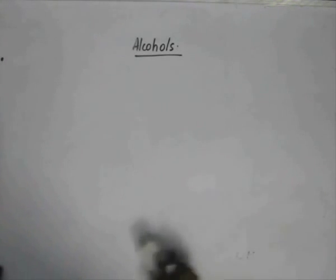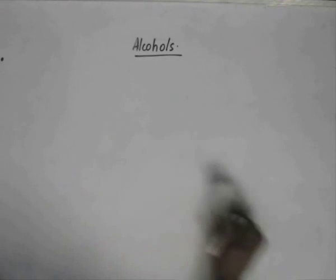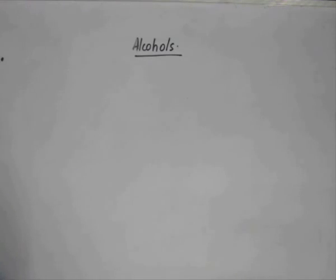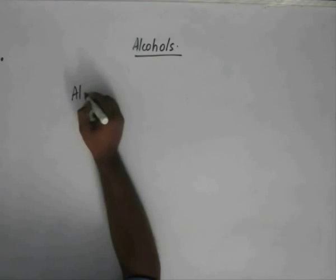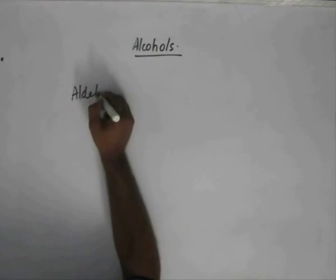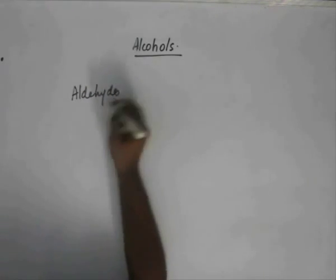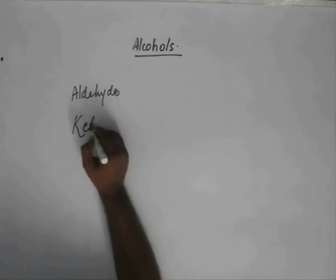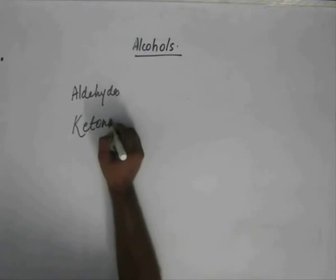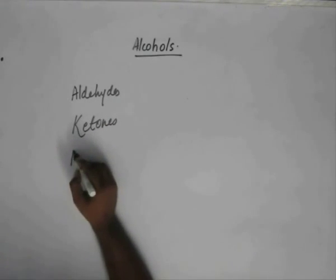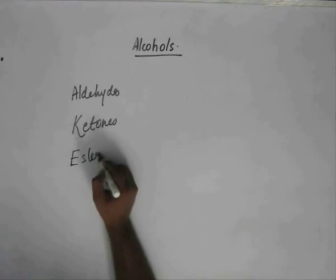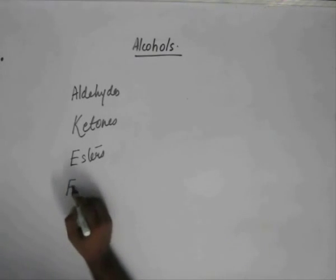Grignard reagents have a very wide range of application in the production of alcohols. They can be used on aldehydes, on ketones, on esters, and even epoxides.